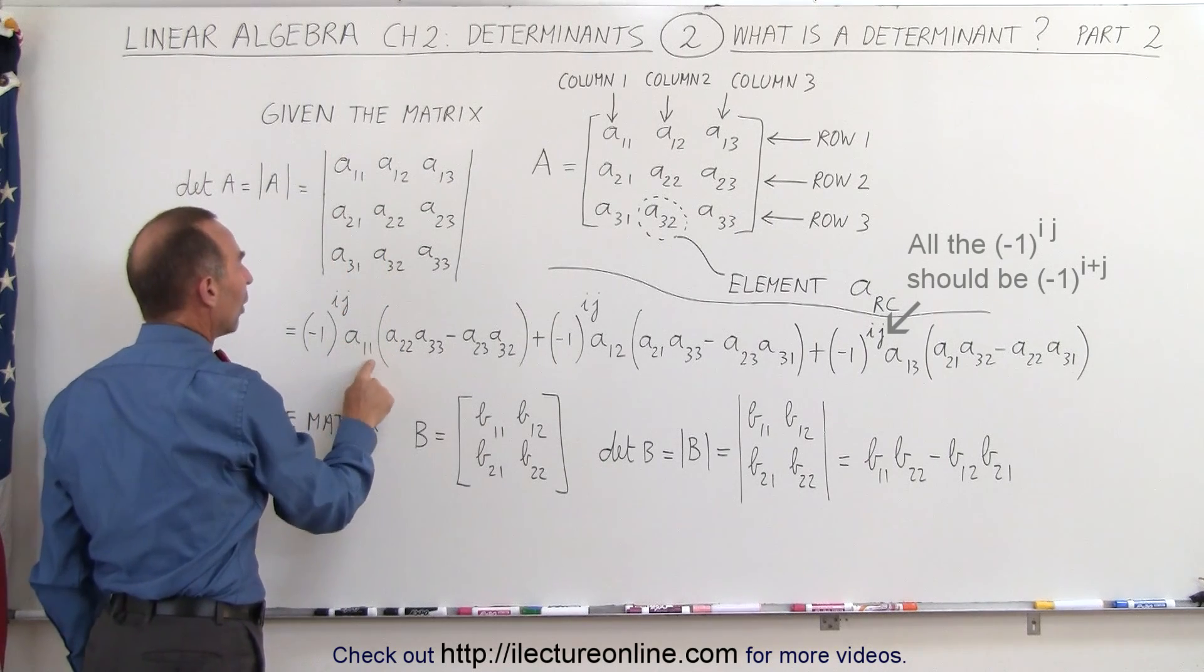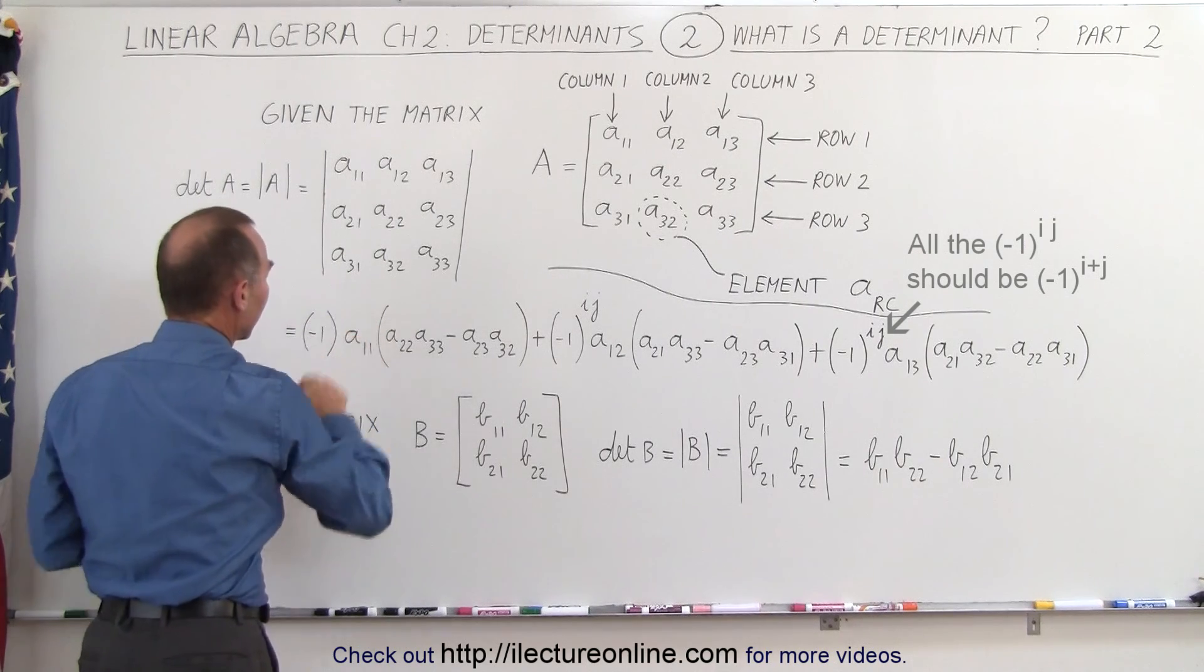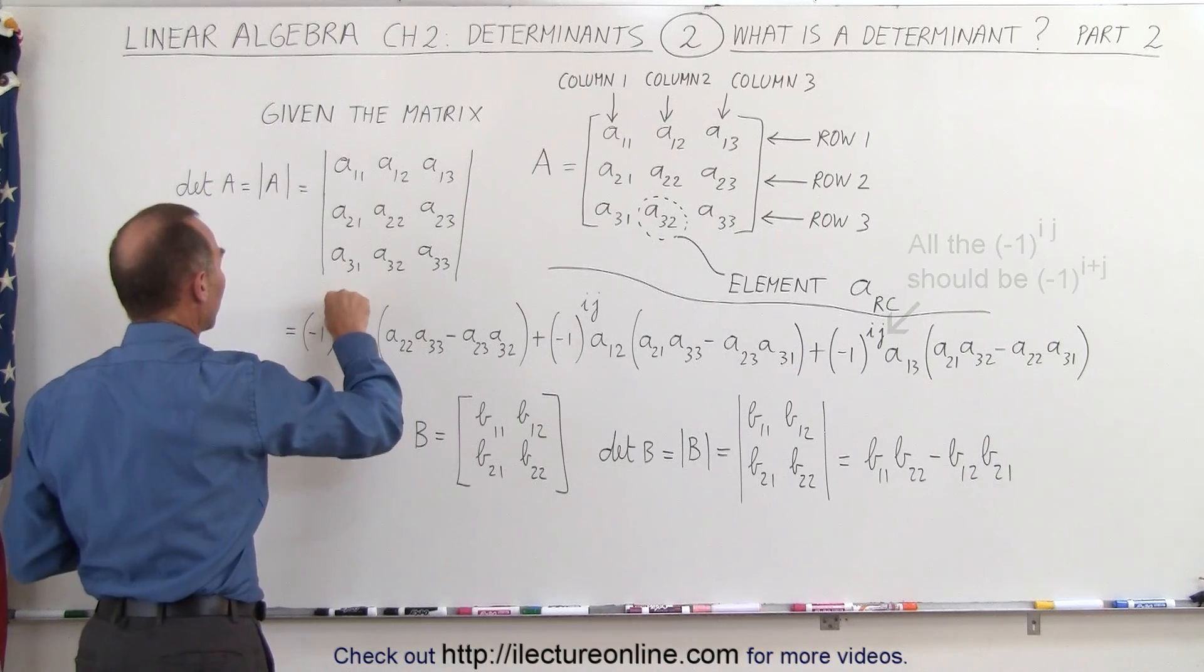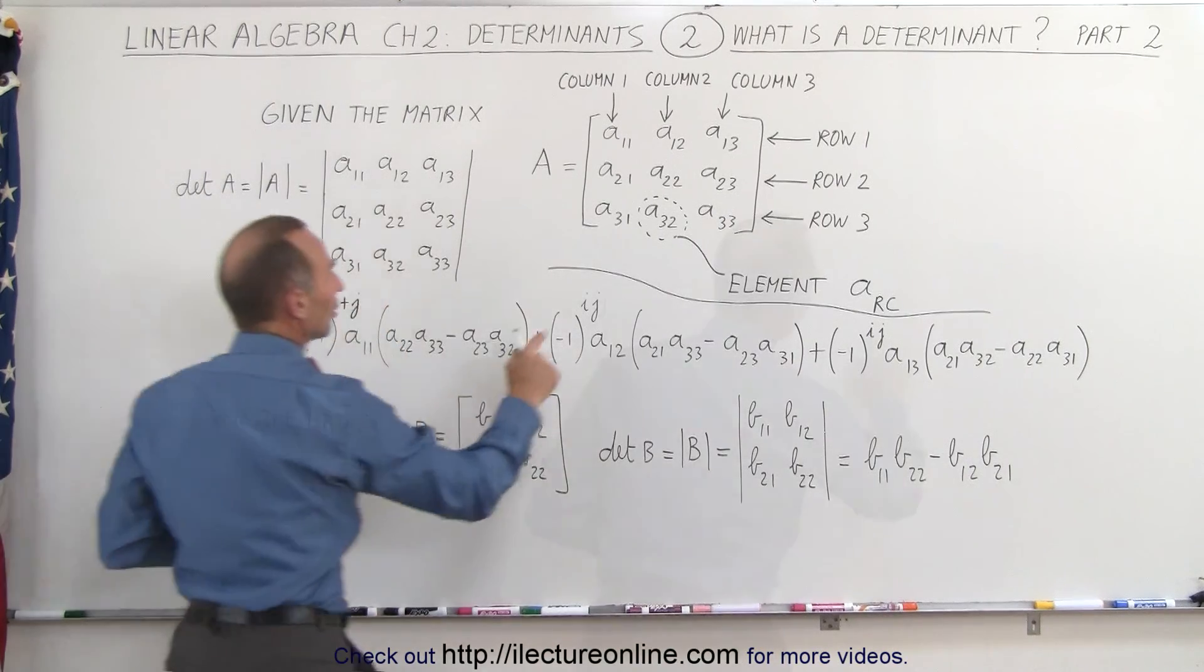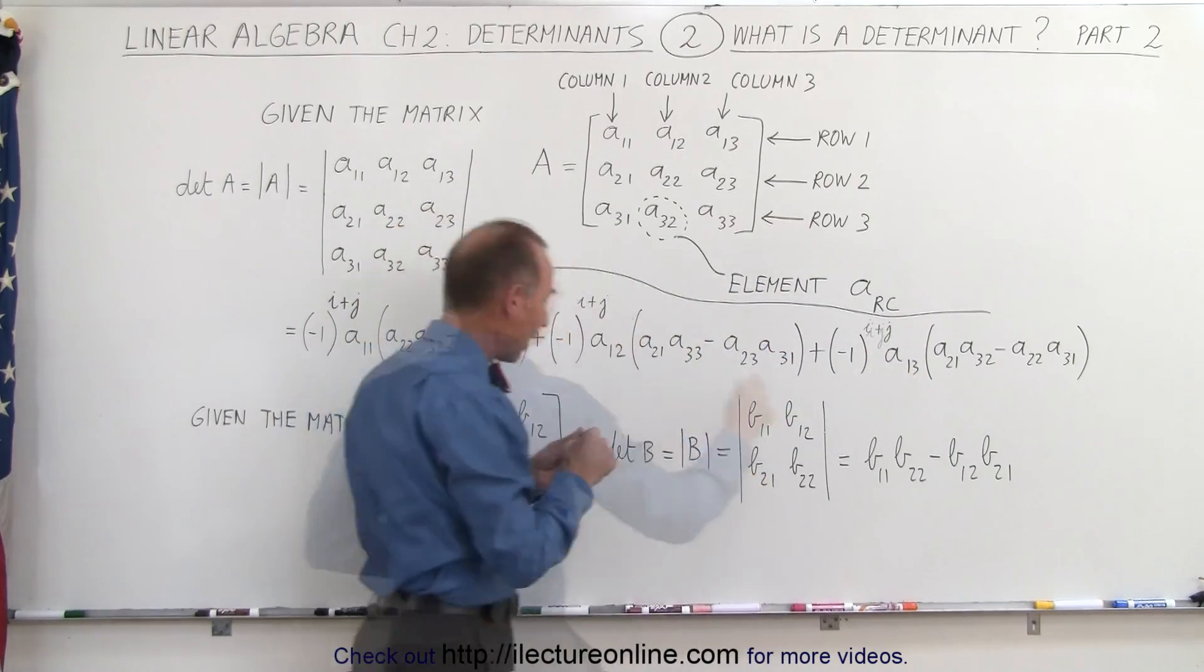So you start with A11, I is 1, J is 1, and so actually it's not multiplied. I should write it as I plus J. I have to correct that. This is actually I plus J. There we go. So it's I plus J.